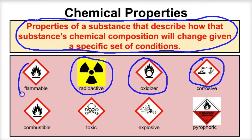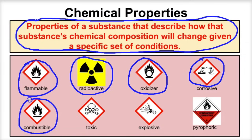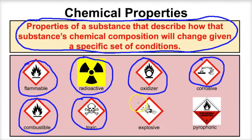So things like flammability, radioactivity, a substance being an oxidizer or corrosive — these are all chemical properties. If we said that oxygen is combustible, that tells us how oxygen is going to react with an open flame; it's going to be converted into carbon dioxide and water vapor. If we said something is toxic, that too is a chemical property. If we said TNT is explosive, that too would be a chemical property of that substance.